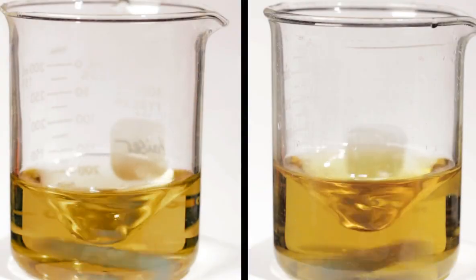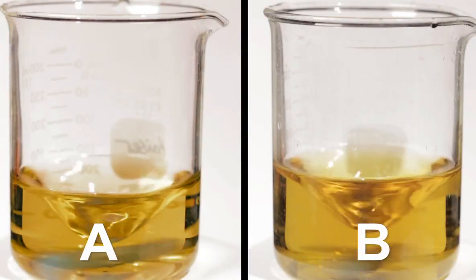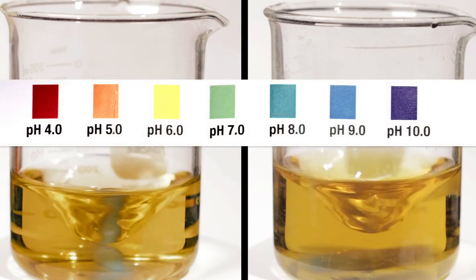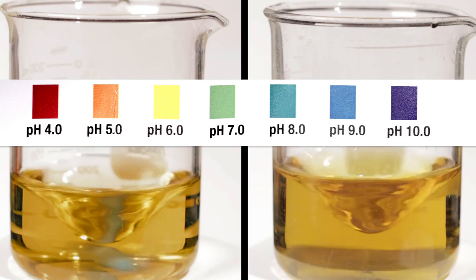Here are two solutions, A and B, to which I've added universal indicator. Here's the color key. As you can see, both of these solutions are around pH 6, or very slightly acidic.